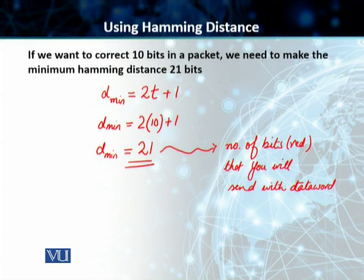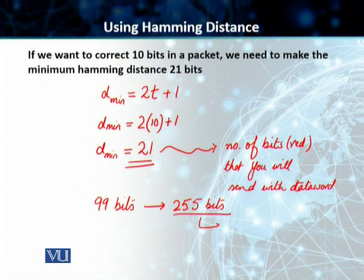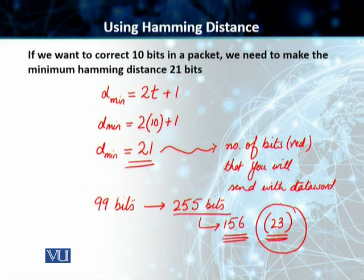In this case, if the data is 99 bits, your actual data is 99 bits, if you do the math, we need to send a total of 255 bits. And out of those 255 bits, unfortunately, 156 bits is your redundant bits or your overhead, and it will only correct 23-bit errors. This is all that we are targeting, and we are sending 156 extra bits with this data.